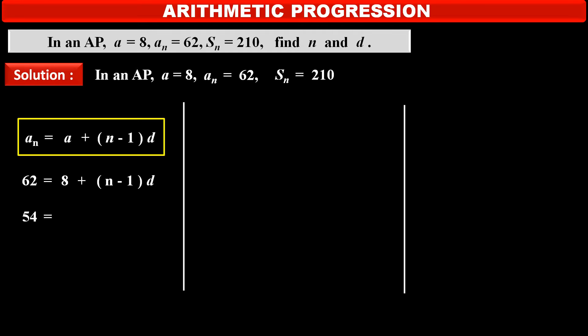62 minus 8 that is 54 is equal to N minus 1 into common difference D. Consider this as statement number 1.